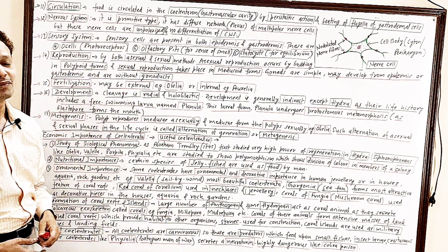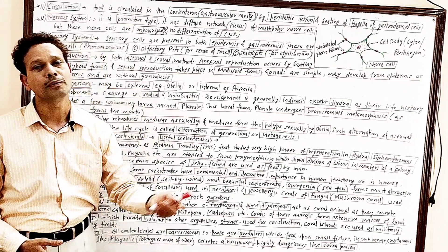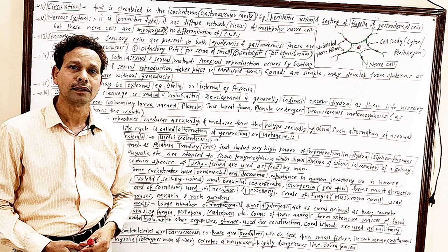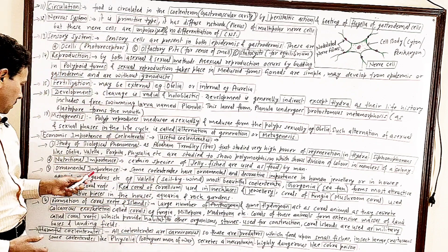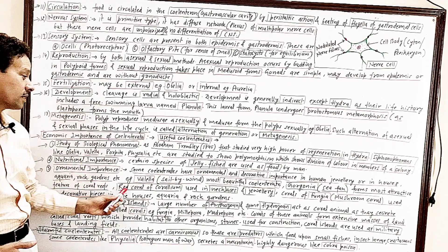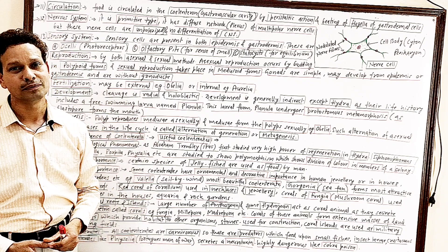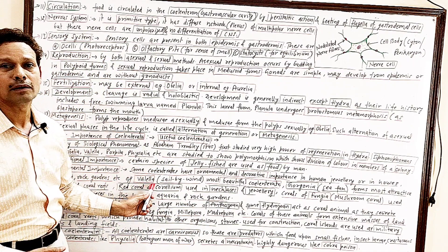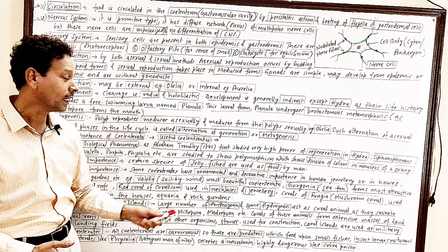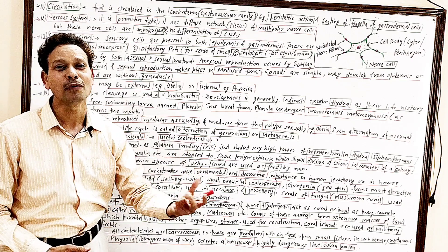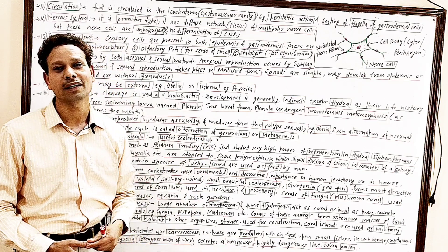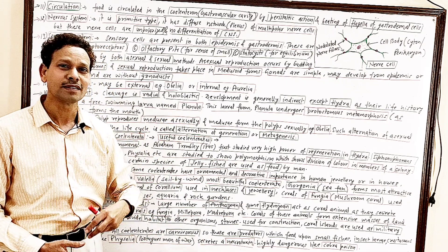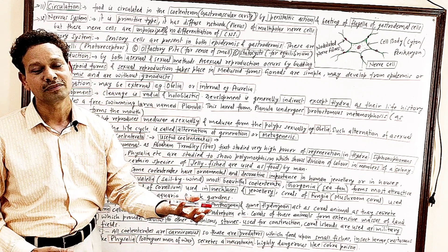Nutritional importance: certain cnidarians are consumed as food by man, as several species of jellyfish are commonly used by man, particularly in Italy. Ornamental importance: some cnidarians have ornamental and decorative value as they are very beautiful. For example, Velella — commonly named 'sail by wind' — is the most beautiful cnidarian and is used as a decorative article in houses, gardens, and aquariums, as well as in jewelry.